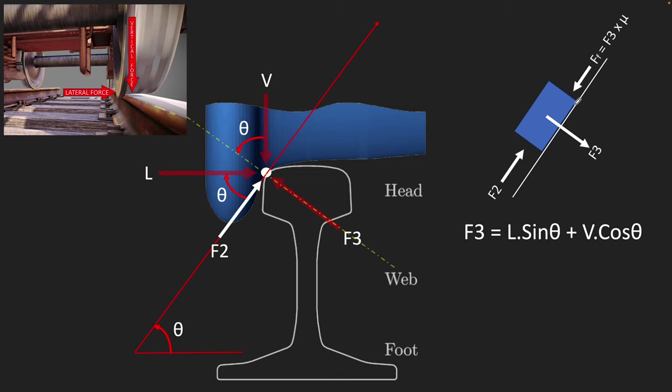But in our scenario, it's not a perfectly horizontal plane. It's actually on a certain angle. So because of the angle, let's try to determine what these normal perpendicular forces are. F3 is the normal perpendicular force. It will be equal to the weight of the train adjusted by a certain angle, V cos theta, plus the lateral force adjusted by a certain angle, L sin theta. That would be the perpendicular force.